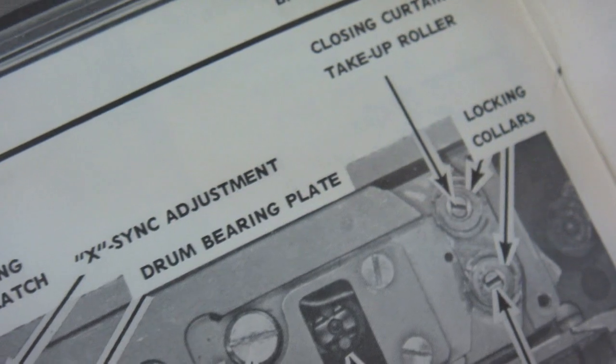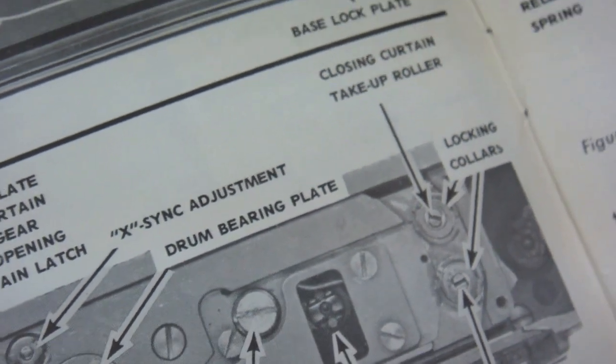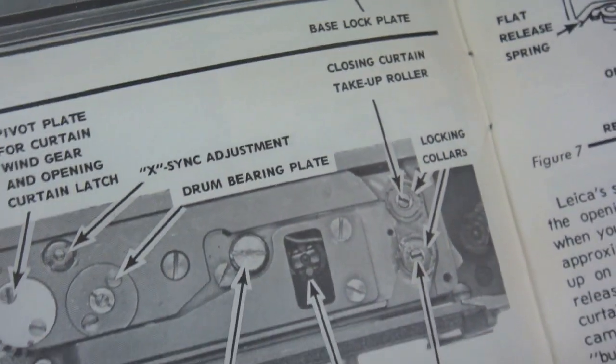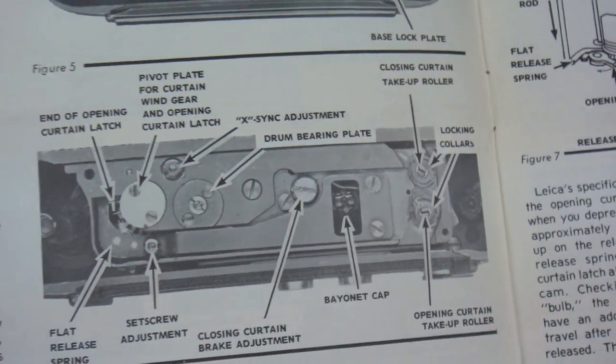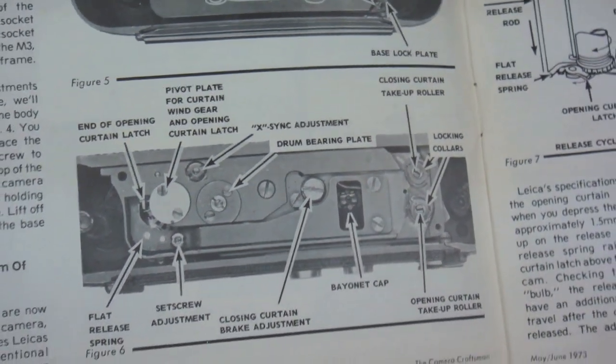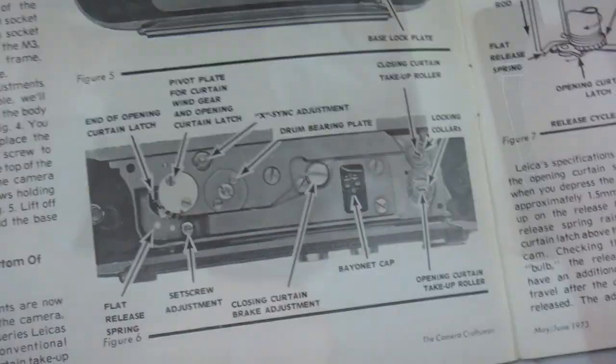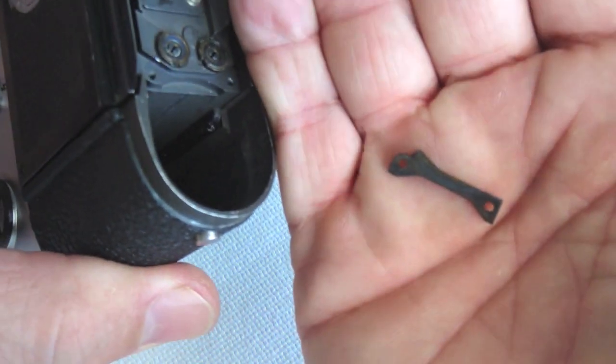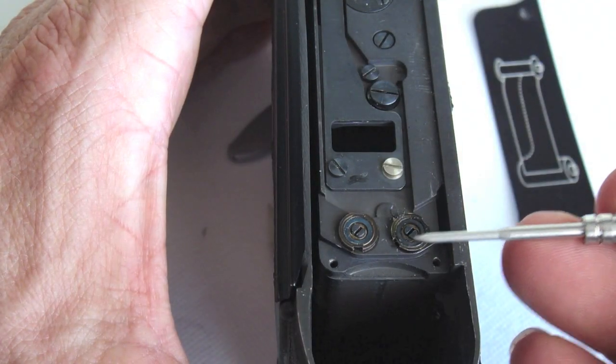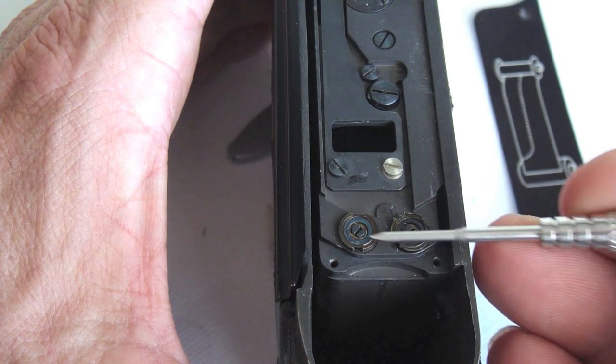Back to the M-Series shutter tension adjustment procedure outlined in Camera Craftsman May-June 1973. Don't lose the bottom cover spacer, and note the following curtain and the lead curtain.